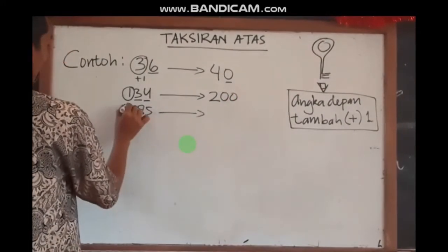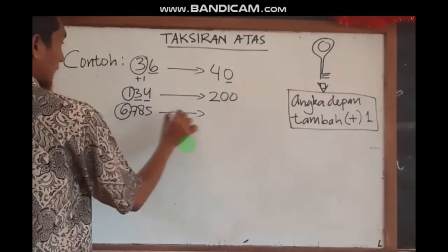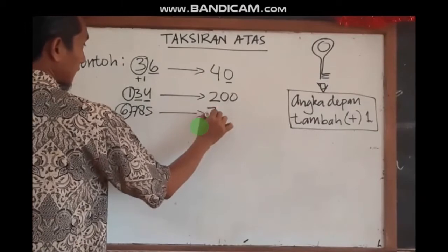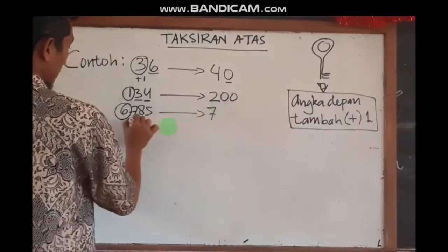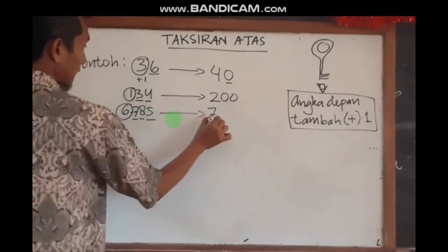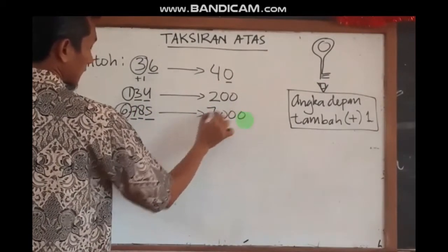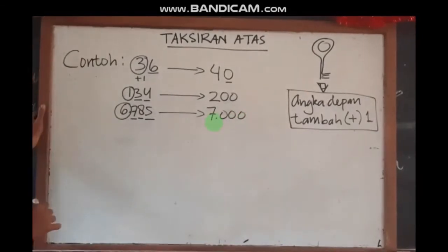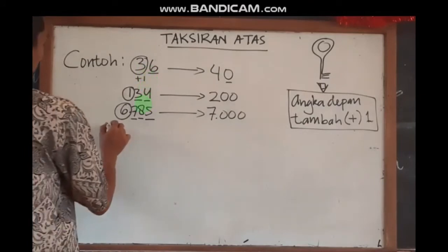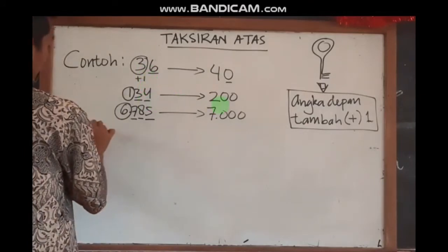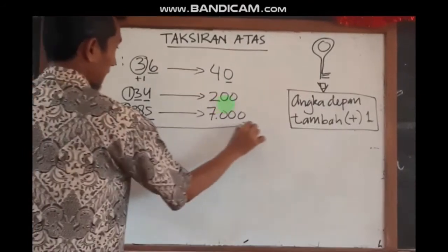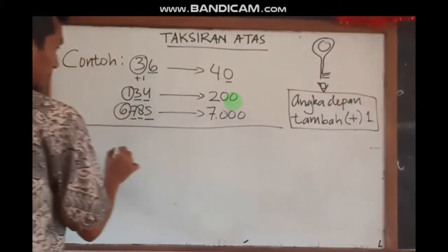6.785 — angka 6-nya kita ambil menjadi 7, dan ada 3 angka di belakangnya, maka menjadi 3 nol atau ribuan, jadi 7.000. Sekali lagi: angka depan tambahkan 1, yang belakangnya dikonversikan atau diganti menjadi angka 0.